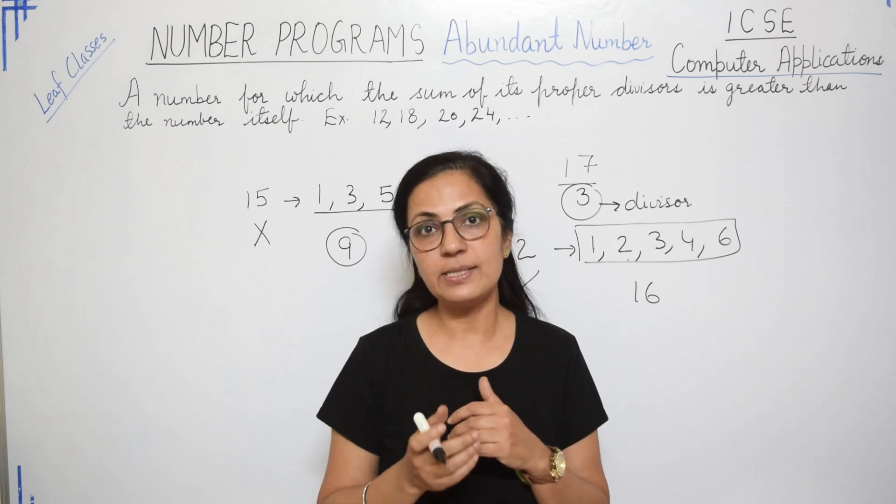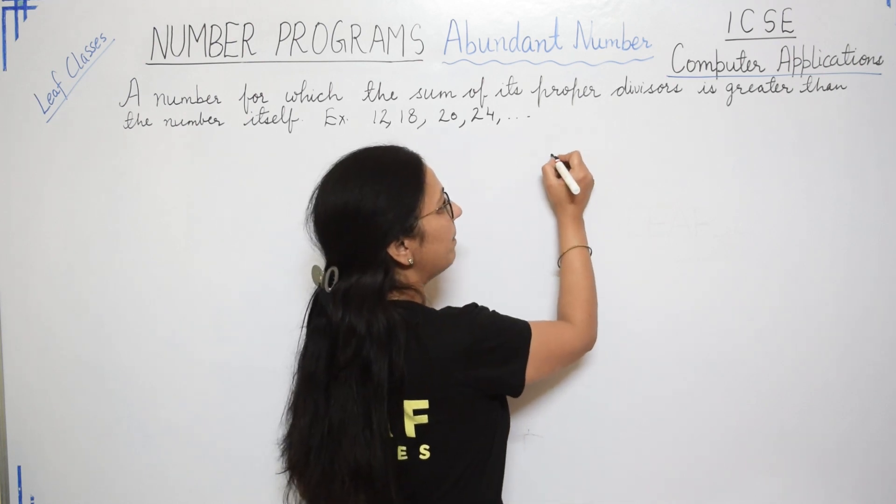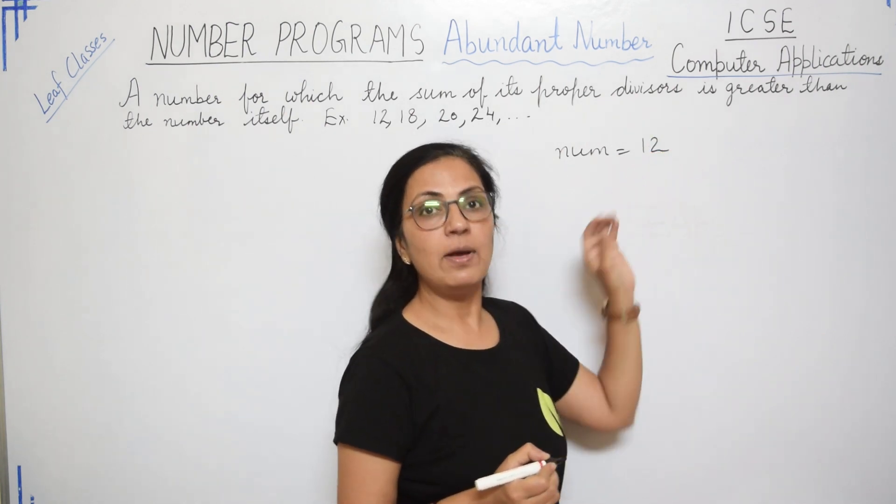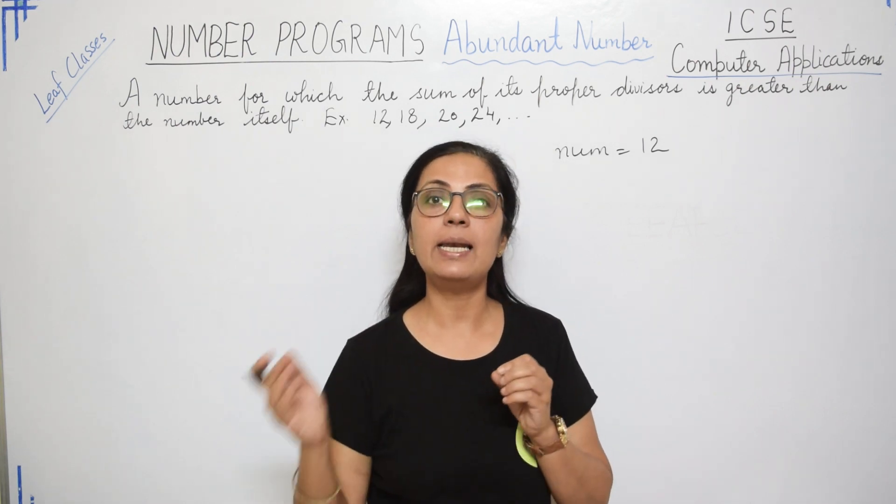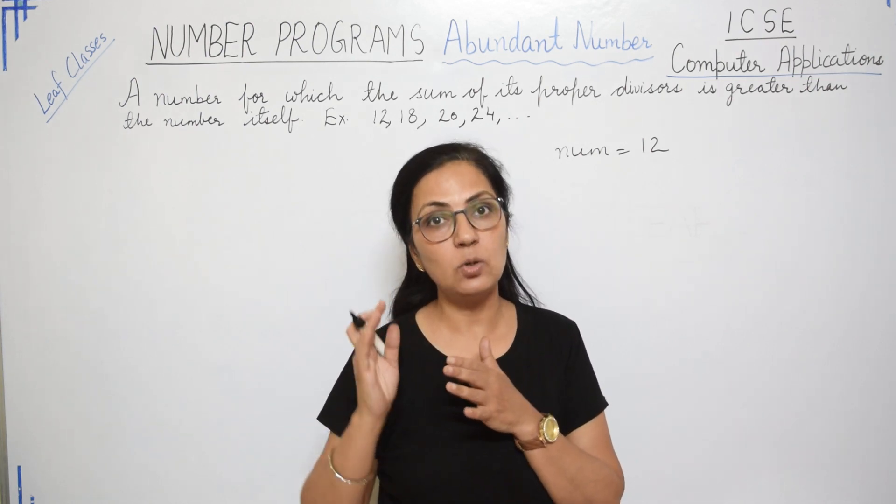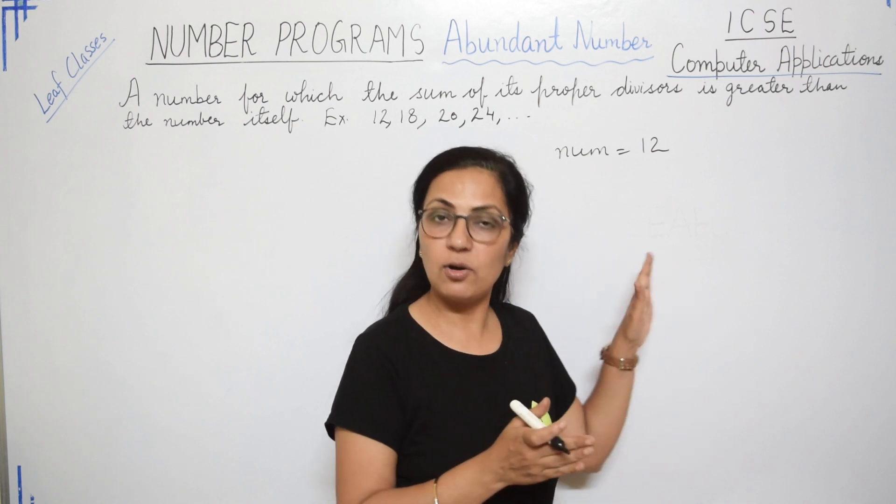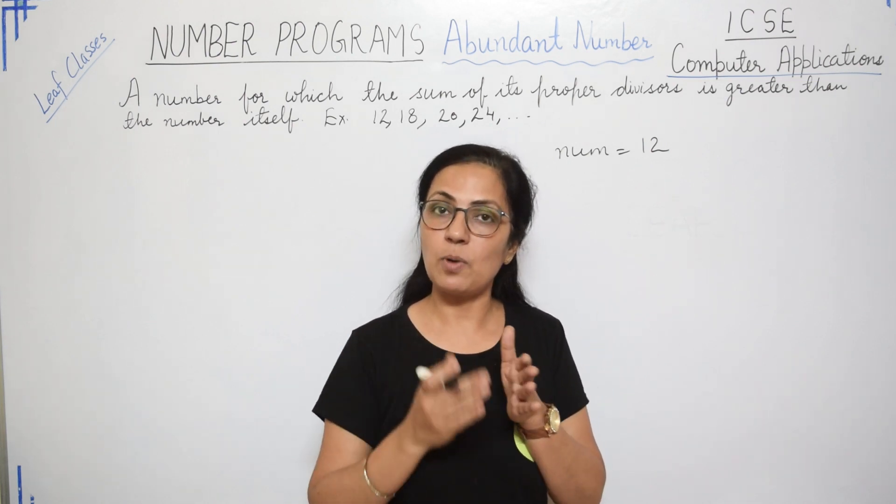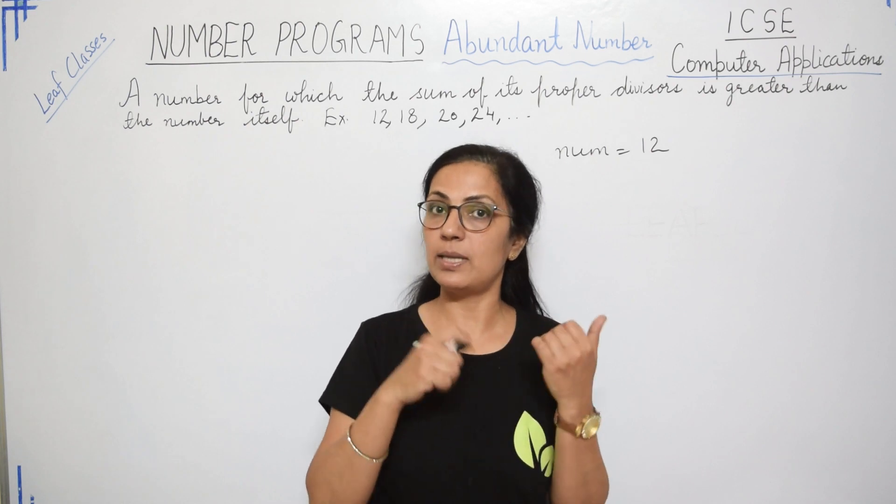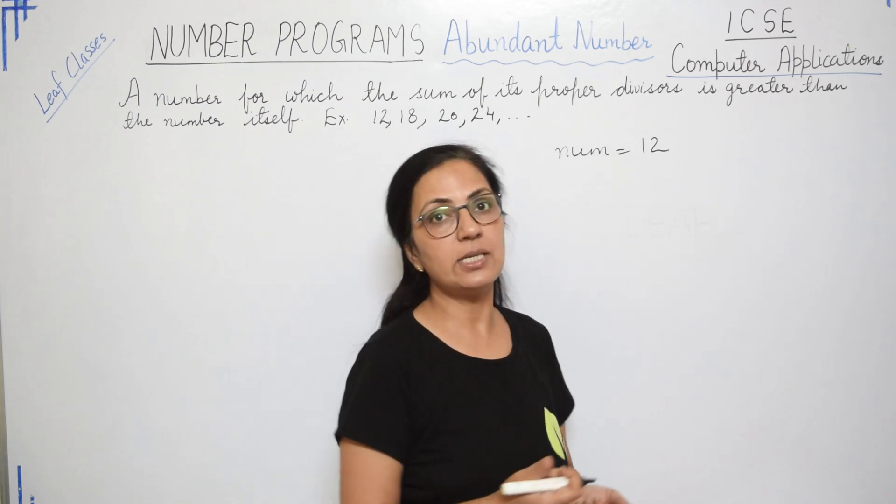Now let me tell you the logic first and then we will do the program for this. For explaining you the logic, I am taking the example the number as 12 only. Now for finding the proper divisors of 12, we will take the loop starting from 1 till less than 12. And every time we will be dividing this number with that looping variable. Wherever the remainder is 0, that means that number is the proper divisor of 12. And we will be adding those proper divisors. And after completion of the entire loop, we will check whether that sum is more than 12 or not more than 12. And accordingly we will decide whether the 12 number is abundant number or not.